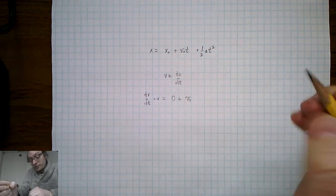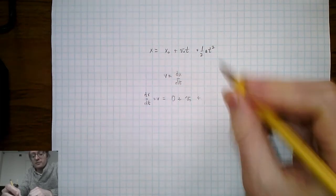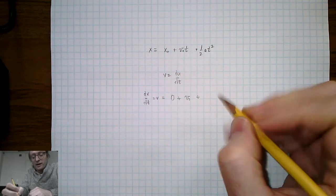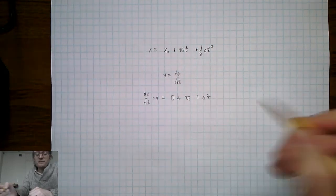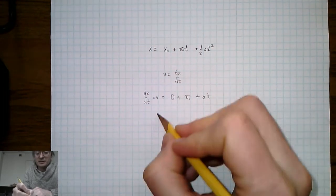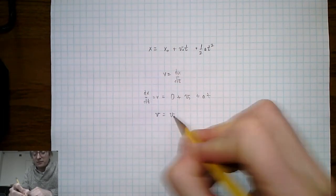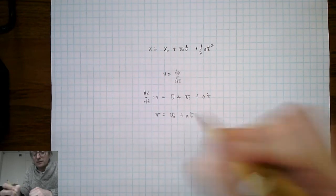The third term, when we take the time derivative, the exponent 2 comes down and cancels the one-half, leaving at. So we can see that velocity is now given by v0 plus at.